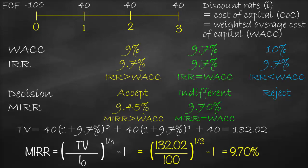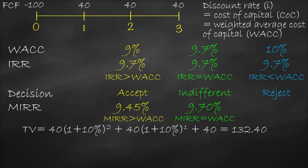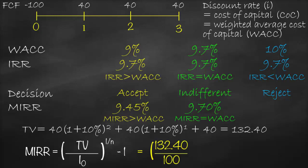Our last scenario is WACC = 10%. Terminal Value: in year one, 40 × (1 + 10%)²; in year two, 40 × (1 + 10%)¹; plus 40 in year three. This gives Terminal Value = 132.4 million. Substituting into the MIRR formula: MIRR = (132.4 / 100)^(1/3) − 1 = 9.81%. We reject the project when MIRR is lower than WACC.